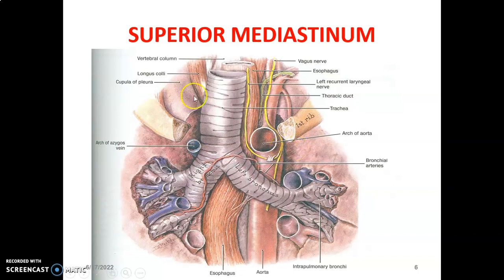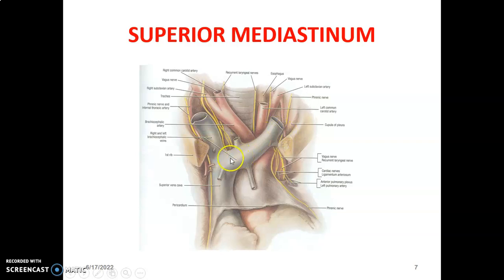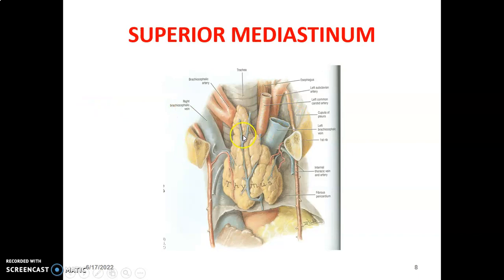This is the thoracic inlet from the first rib to the manubrium, showing the contents of the superior mediastinum at this level. You can appreciate the aorta and the arc of the aorta and its branches — the left common carotid, the brachiocephalic trunk with right common carotid and right subclavian. This is the brachiocephalic vein with the right and left joining to form the superior vena cava. The superior mediastinum also contains parts of the thymus gland.